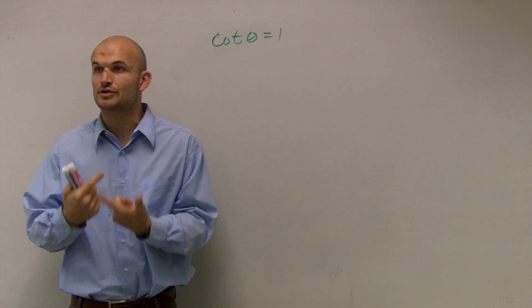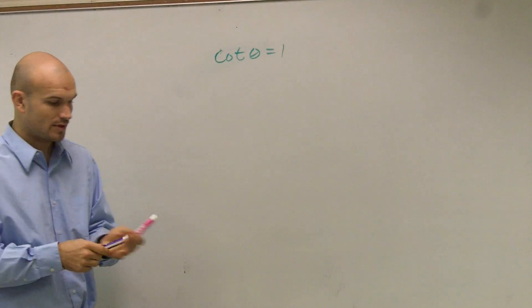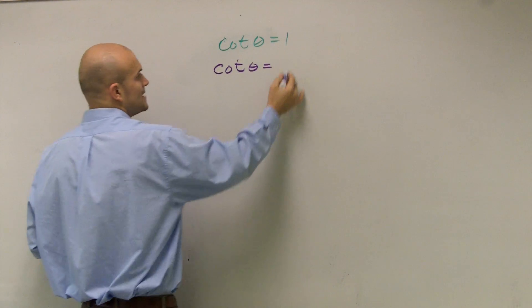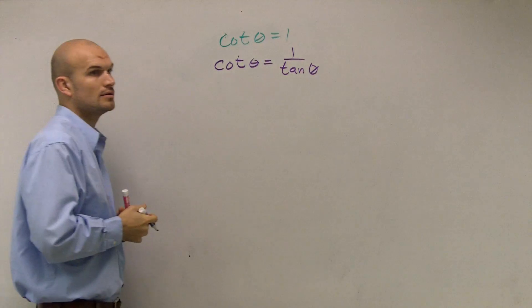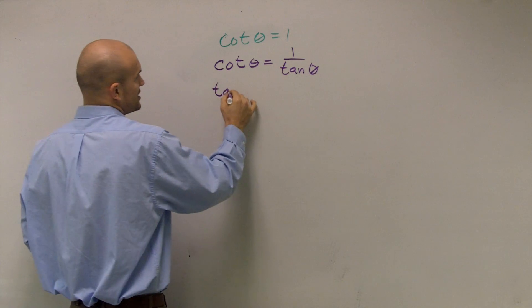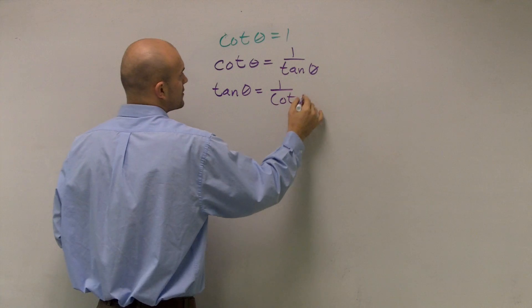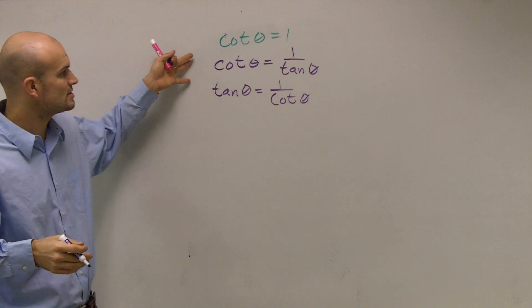So we need to remember what does cotangent equal. Well there's a couple things we can say: cotangent of beta is the same thing as 1 over tangent of beta, and tangent of beta is the same thing as 1 over cotangent of beta. So those are kind of reciprocals identities you can work with as far as cotangent.